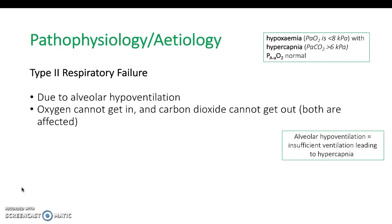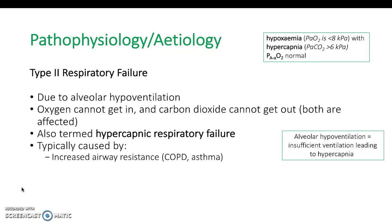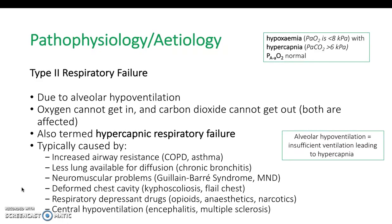Type 2 pathophysiology involves not getting enough air into or out of the alveolus, so it can also be termed hypercapnic respiratory failure because carbon dioxide will be high. The most common causes are COPD and asthma — all that bronchoconstriction and mucus makes it hard for air to get in and out. Other conditions such as Guillain-Barré syndrome or scoliosis can also cause it, because if you can't move the thoracic cavity you can't draw air in or expel it.